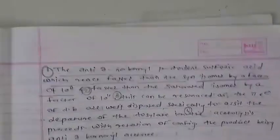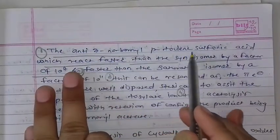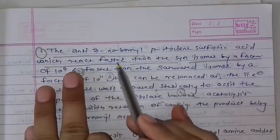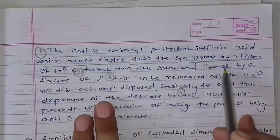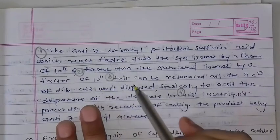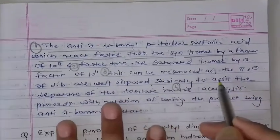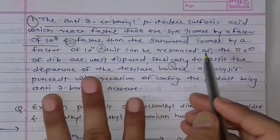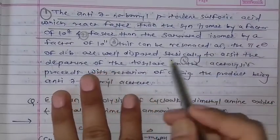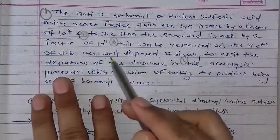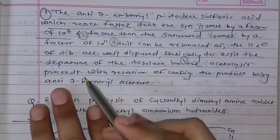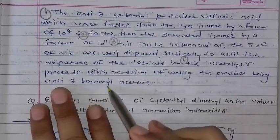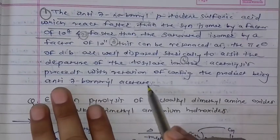The unsaturated isomer reacts faster than the saturated isomer, by a very high reaction factor. Resonance — the pi electrons of the double bond — will be used for sterically assisted rupture of the isomer. The product begins the same as normal.